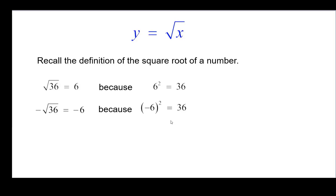The negative square root of 36 is negative 6 because the quantity negative 6 squared is 36. And you can also write plus or minus radical 36 is plus or minus 6.